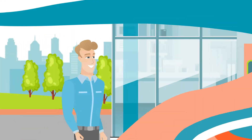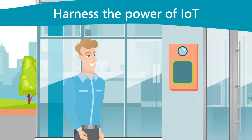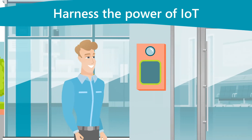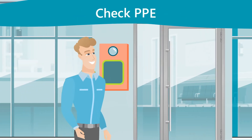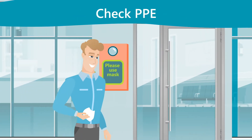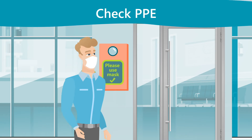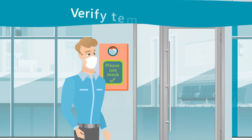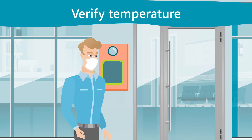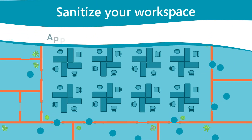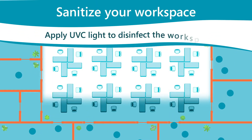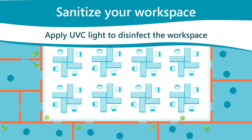Harness the power of the Internet of Things to automate safety and health practices in the workplace. Remind people to protect themselves when entering restricted areas, check employee temperature, monitor occupancy, and disinfect the workspace with UVC light.